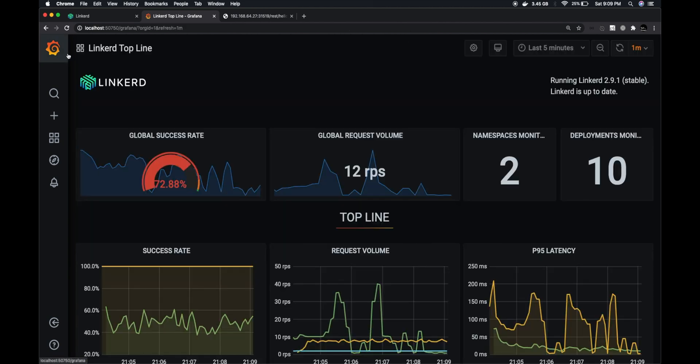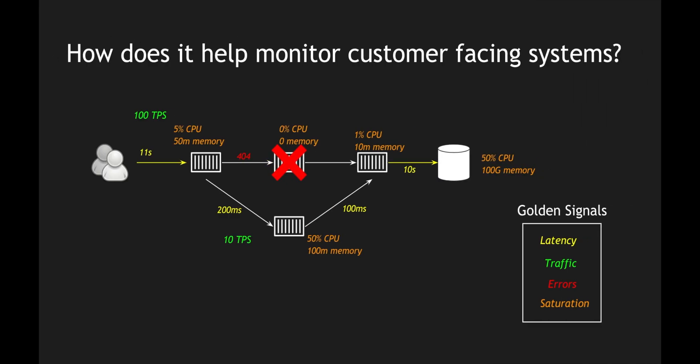To summarize: golden signals are four key metrics to monitor your application efficiently. Latency identifies what is slowing down your system. Traffic identifies the transactions per second your system is currently processing. Errors identify any faults or timeouts within your system. And saturation lets you identify future errors based on CPU utilization and memory metrics. These are the key golden signals that according to Google can help you monitor your application and get the best results in monitoring distributed systems.